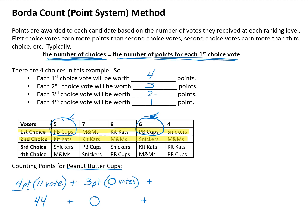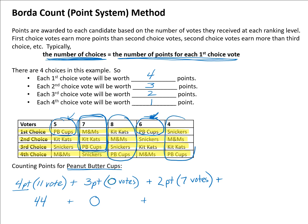Looking at third choice votes across all columns, Peanut Butter Cups appear once: seven people voted for Peanut Butter Cups as their third choice. That's two points for each of those third choice votes, so seven times two points. For fourth choice votes, Peanut Butter Cups appear twice in the last position — eight people plus four more — giving a total of twelve votes in last position.